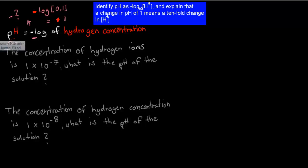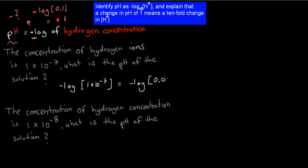Practice question: the concentration of hydrogen ions is 10⁻⁷. What is the pH? You use the formula — minus log of the concentration — so minus log of 1 × 10⁻⁷, which is the same as minus log of 0.0000001. If you put that into a calculator, you get a pH of 7.